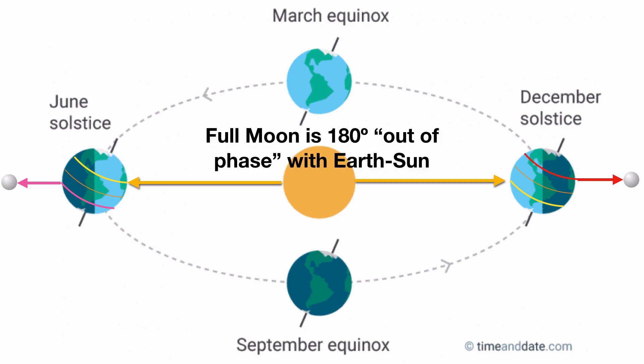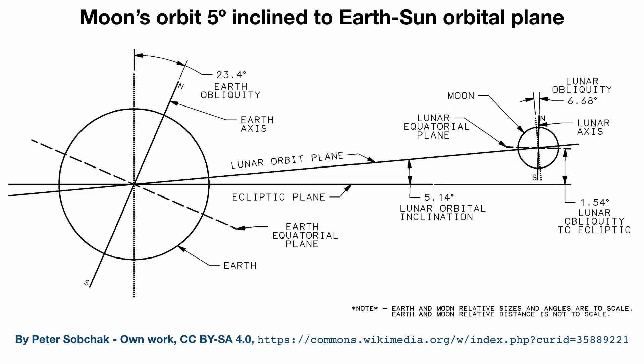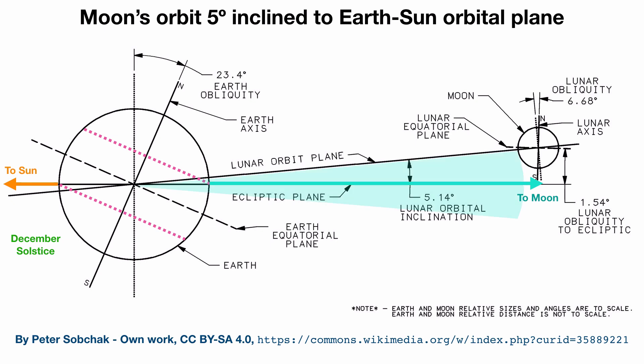The full moon is 180 degrees out of phase with the Earth-Sun vector. In the December solstice, the southern pole is tilted towards the sun and the north pole away. The moon will be directly above the Tropic of Cancer, though not exactly directly away because of the plus or minus 5 degrees orbital wiggle room.